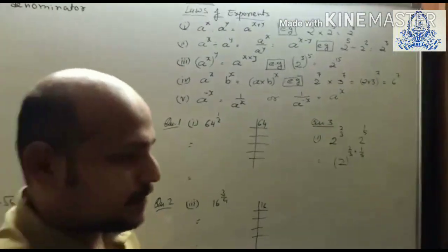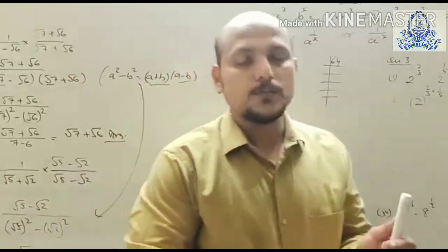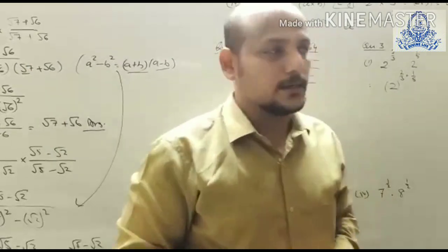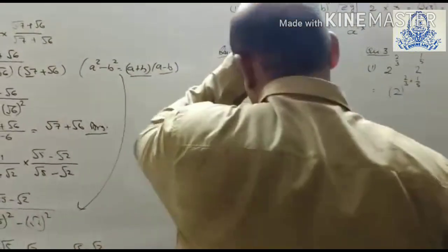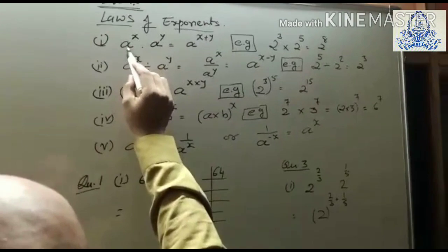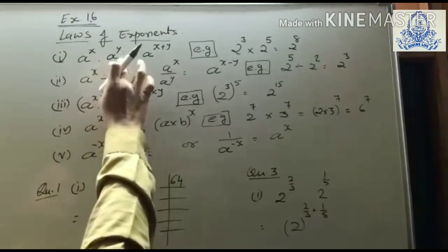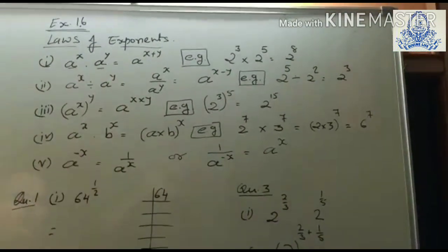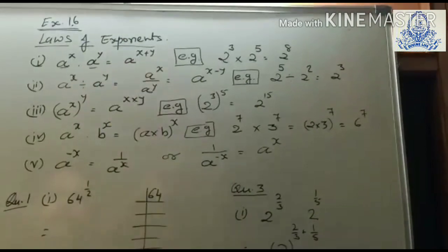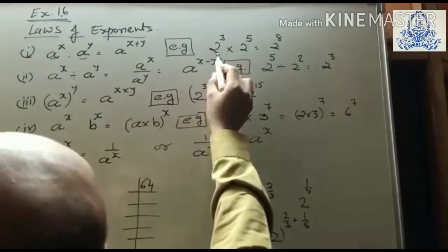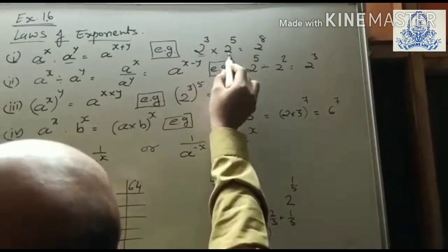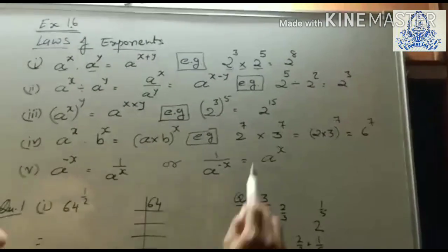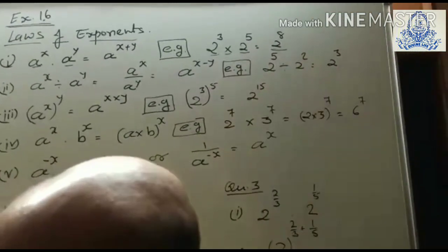Now let's start Exercise 1.6. Before starting, we need to review some exponential formulas from 8th standard. Rule 1: a^x × a^y. Here the bases are the same but exponents are different. When multiplying with the same base, we add the exponents. For example, 2³ × 2⁵ — base is same, so we add the exponents to get 2⁸.